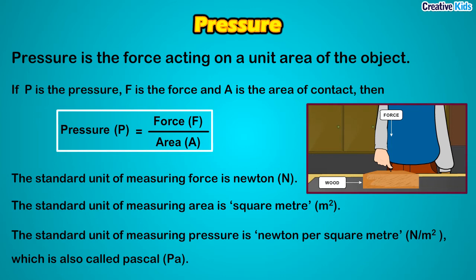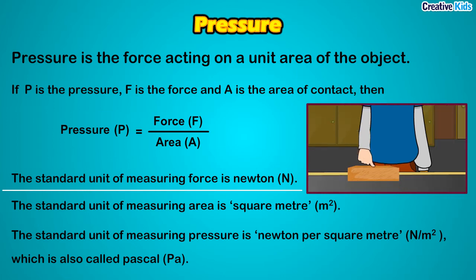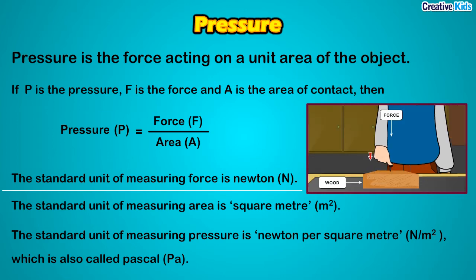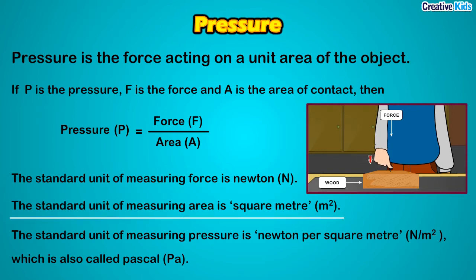What is the standard unit of measuring force? The standard unit of measuring force is Newton. The standard unit of measuring area is square meter. So the SI unit of pressure equals the SI unit of force divided by the SI unit of area — Newton divided by meter square — giving Newton per meter square.